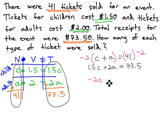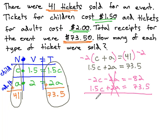We now have negative 2C minus 2A equals negative 82, and the other equation 1.5C plus 2A equals 73.5. We can now add them together with the A's eliminating, giving us negative 0.5C equals negative 82 plus 73.5, which is negative 8.5.